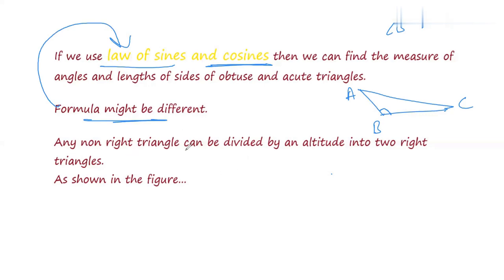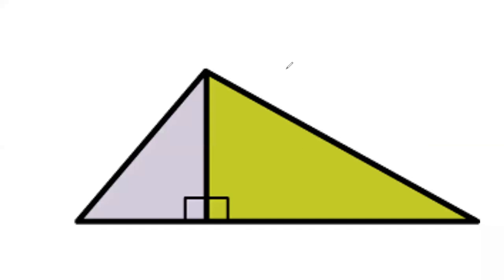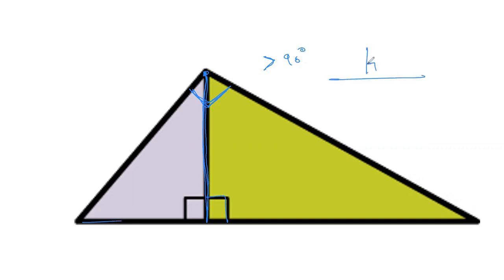One more point: any non-right triangle — for example, this obtuse angle triangle where one angle is greater than 90 degrees — if you need to apply trigonometry, you can divide this triangle into two right angle triangles by drawing an altitude. An altitude is a line drawn from one vertex of a triangle that makes an angle of 90 degrees with the opposite side.